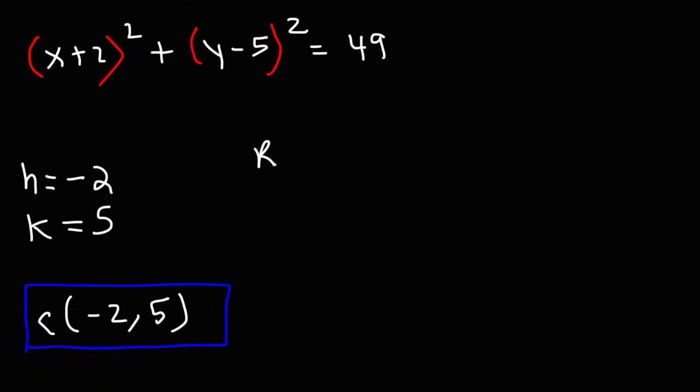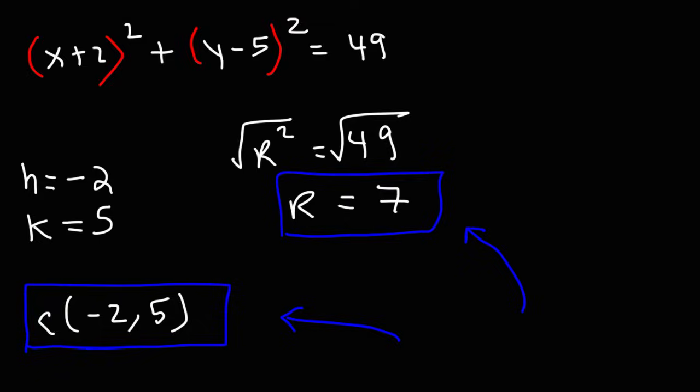Now let's calculate the radius. r² is equal to 49. Taking the square root of 49, we get that the radius of the circle is 7. So that's all you need to do in order to calculate the coordinates of the center of the circle and the radius as well.